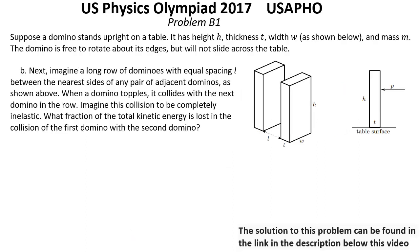Question B. Next, imagine a long row of dominoes with an equal spacing L between the nearest sides of any pair of adjacent dominoes, as shown above. When the domino topples, it collides with the next domino in a row. Imagine this collision to be completely inelastic. What fraction of the total kinetic energy is lost in the collision of the first domino with the second domino?